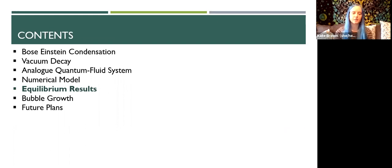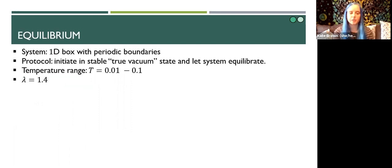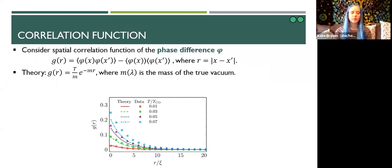In order to verify that this model is appropriate, we compare some results using this model with some known theoretical results for an equilibrium system. We consider a one dimensional homogeneous system with periodic boundaries. We initiate our system in the stable true vacuum state and let it equilibrate over a range of temperatures. For all of our equilibrium simulations, we fix the barrier height by setting lambda equals 1.4.